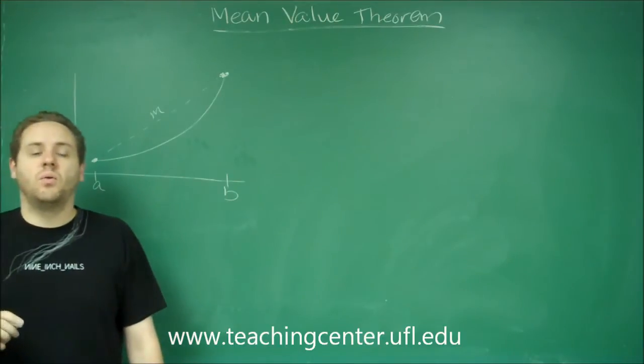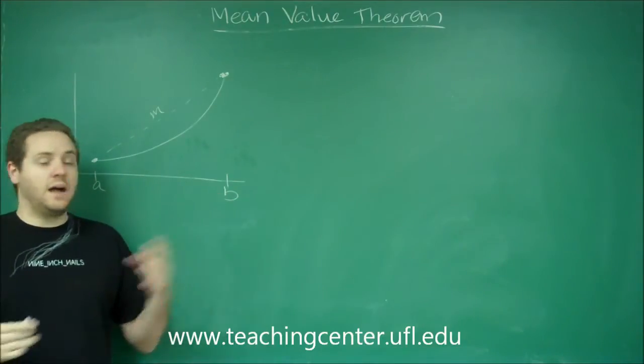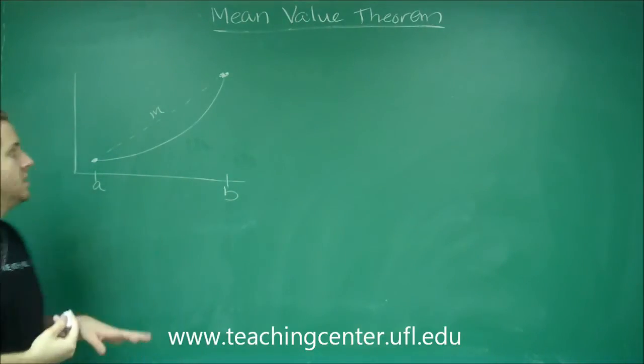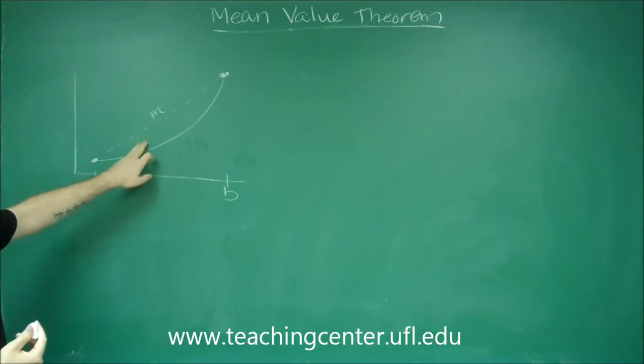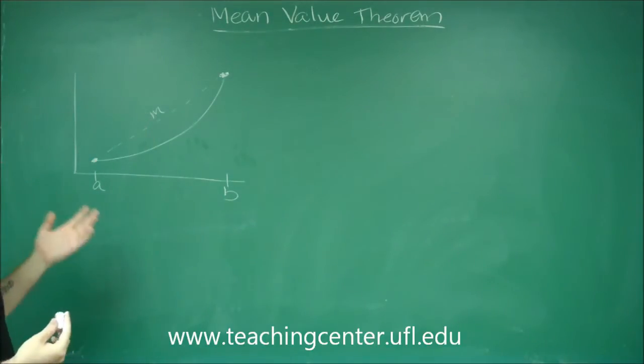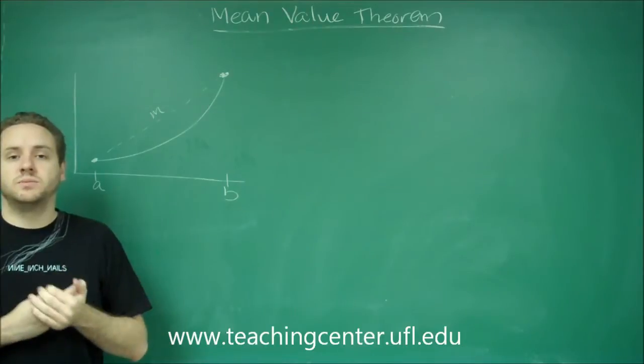So let's think about what that means in an algebraic standpoint. How would we find the slope of m? Well, we would have to do y2 minus y1 over x2 minus x1.